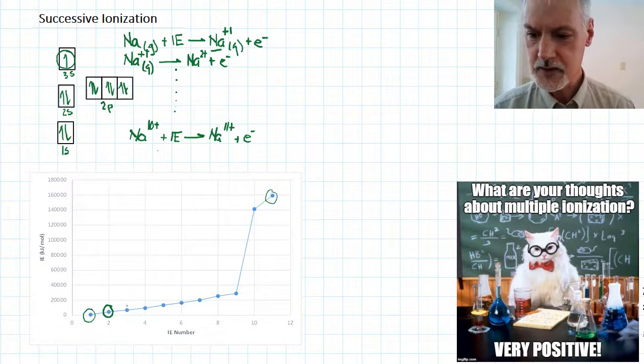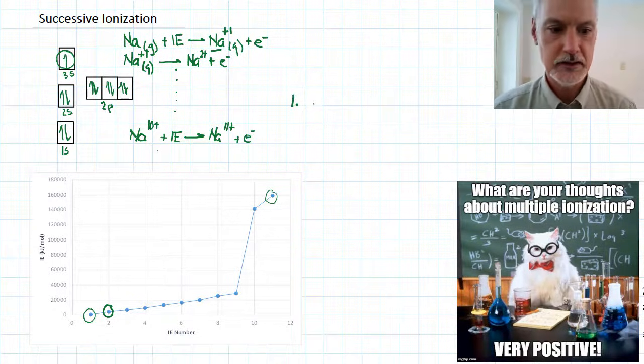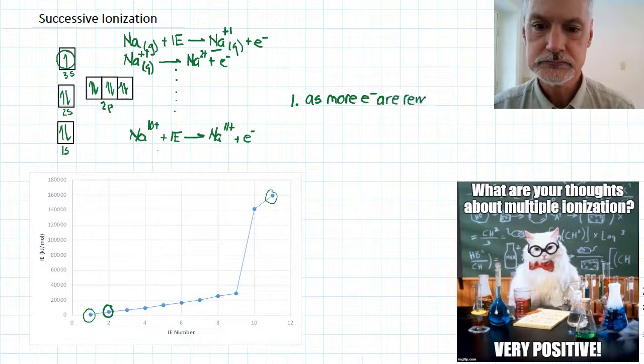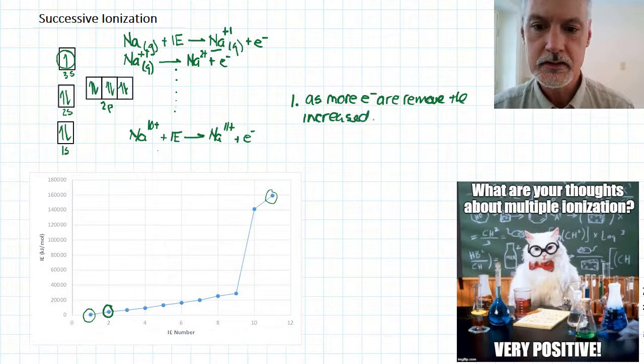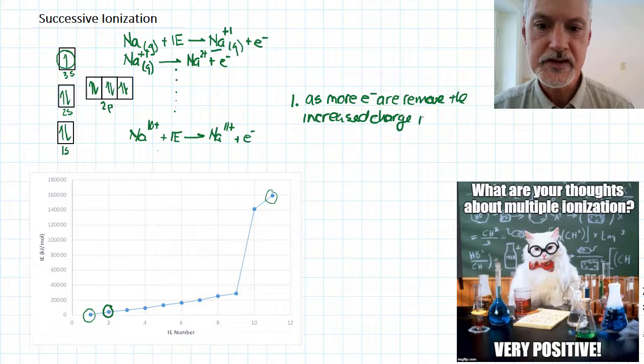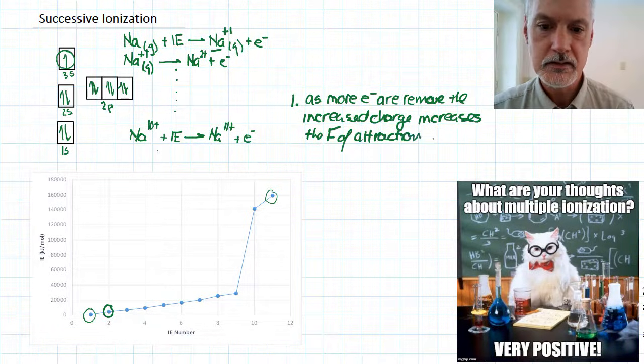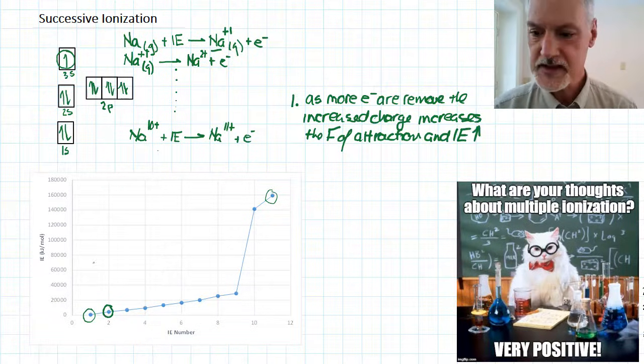The first thing you'll notice in the trend is there's a general increase. So as more electrons are removed, the increased charge increases the force of attraction, and as a result the ionization energy goes up. So that's a general trend.